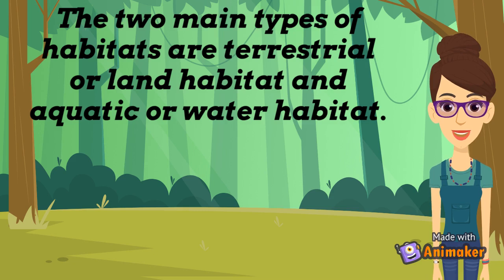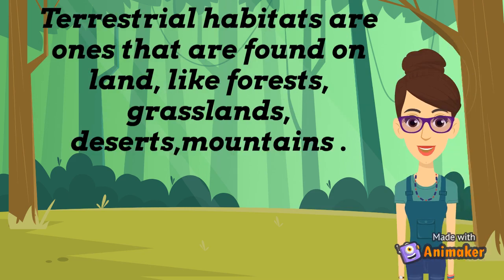The two main types of habitats are terrestrial or land habitat and aquatic or water habitat. Terrestrial habitats are ones that are found on land, like forests, grasslands, deserts, and mountains.